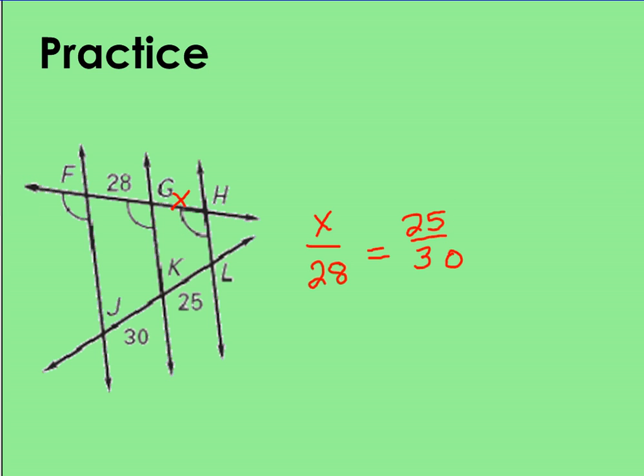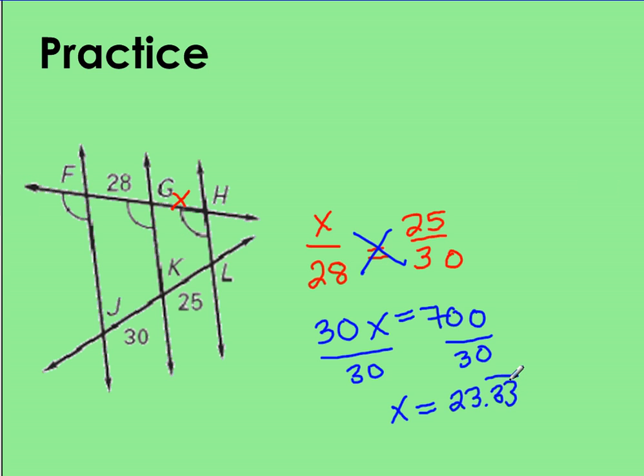In order to solve, we'll need to cross multiply. And we end up with 30x is equal to 700. When I divide both sides by 30, we'll find out that x is equal to 23.3 repeating. So we can say that GH is equal to 23.3 repeating.